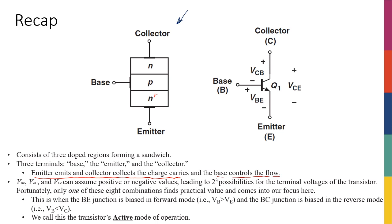We saw that the emitter emits and the collector collects the charge carriers, and the base is there to control the flow. We then introduced the transistor symbol, which implies a current flowing from collector to emitter. When discussing charge carrier movement, we saw that electrons move from the emitter all the way to the collector, so the actual current flows in the opposite direction — from collector to emitter — and the base controls this flow.